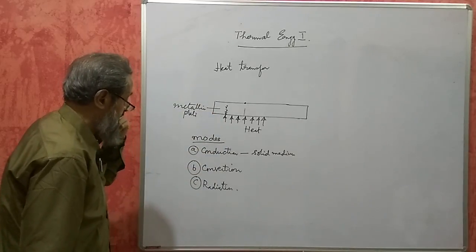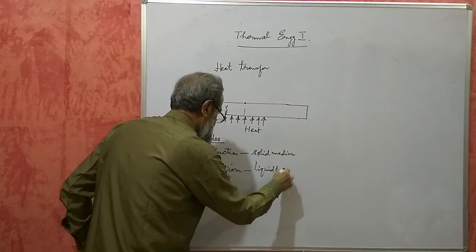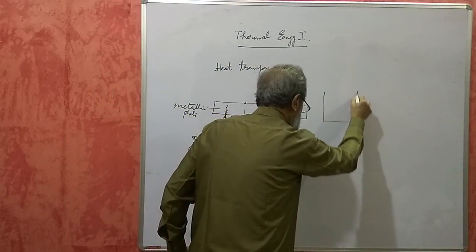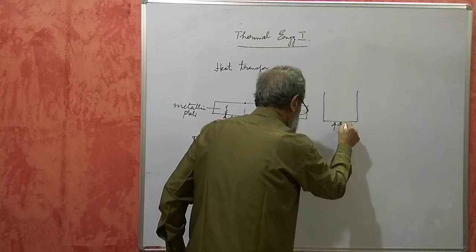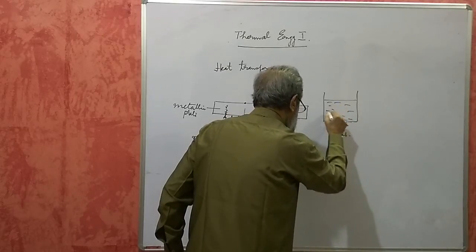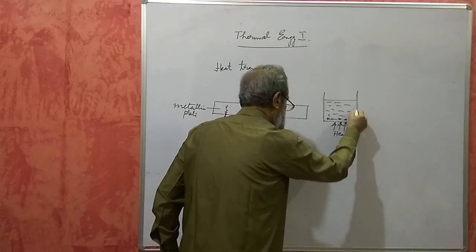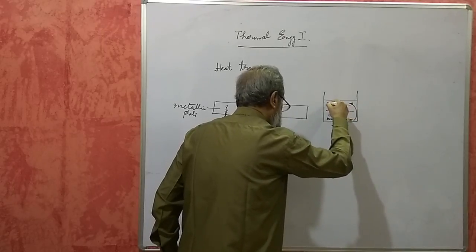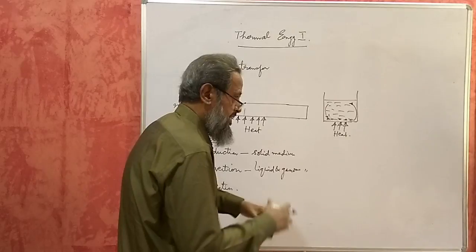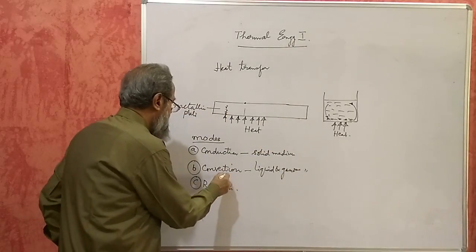Convection takes place in liquid and gaseous mediums. If you heat a liquid in a vessel, the particles near the heat source get heated first, become lighter, and move upward while cooler particles move downward. Heat is transferred from one particle to another due to the movement of the heated particles — that is called convection.